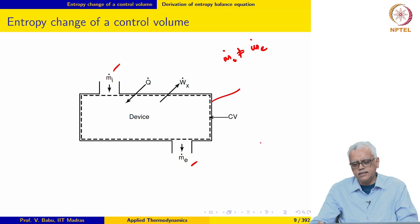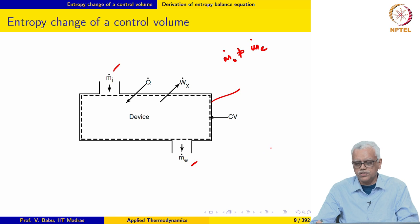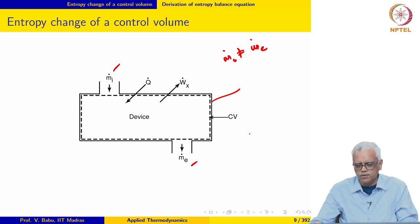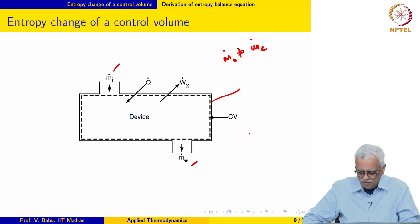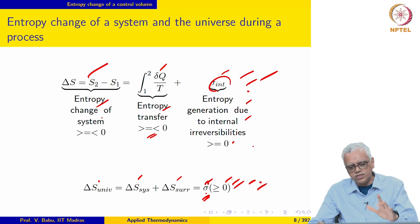Heat is exchanged with the device at the rate of Q̇ watts, and external work or power is supplied or removed from the device at the rate of Ẇ_x watts. We simply take the boundary of the device to be our control volume. Now, what we want to do is develop an expression for entropy change across the control volume. We start with the entropy change expression for a system and then modify it to end up with an expression involving the control volume.